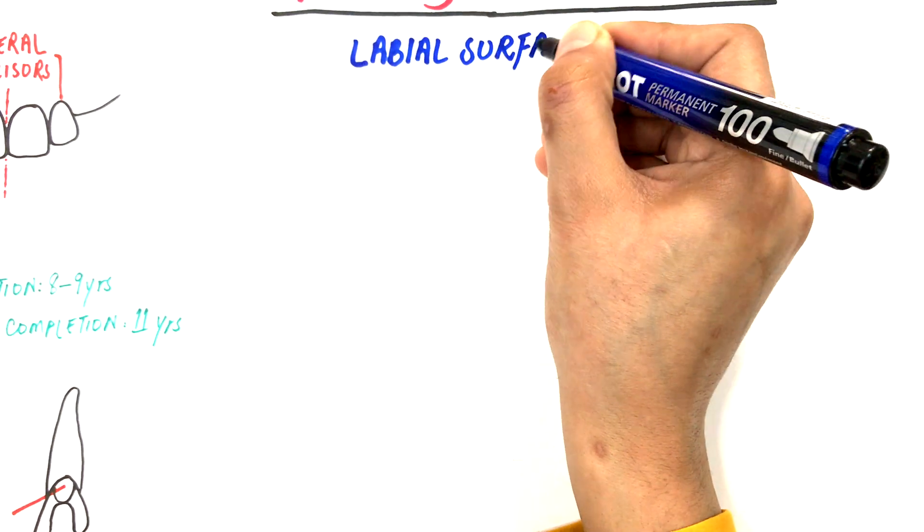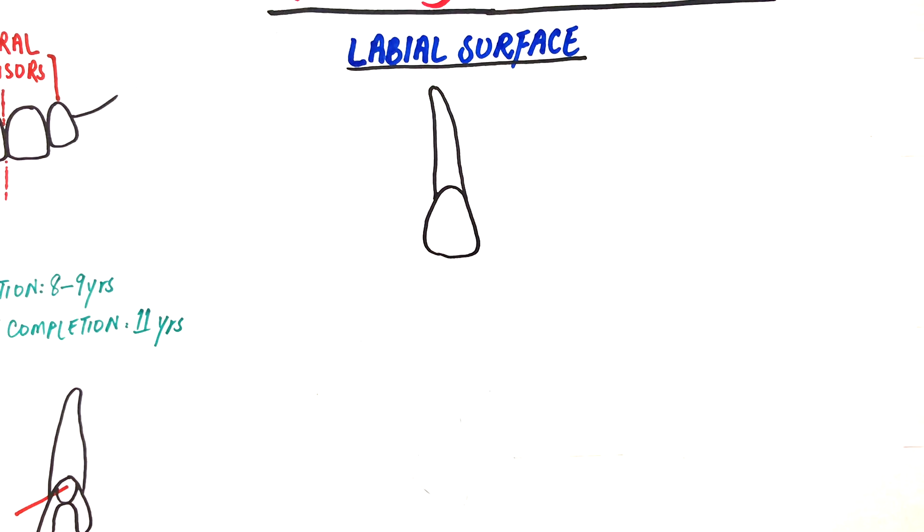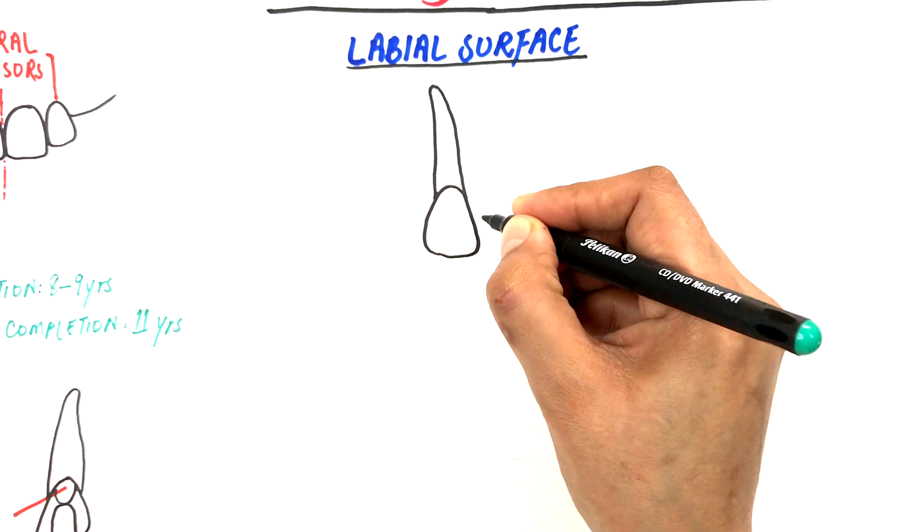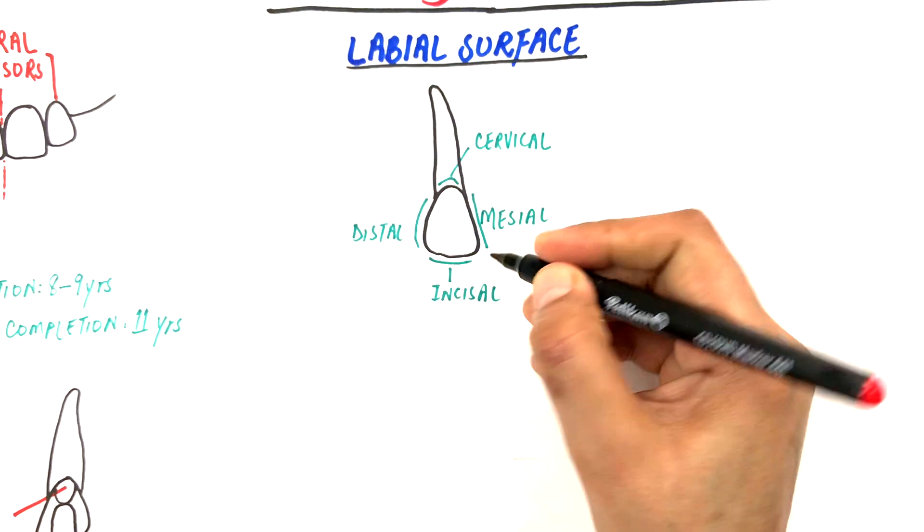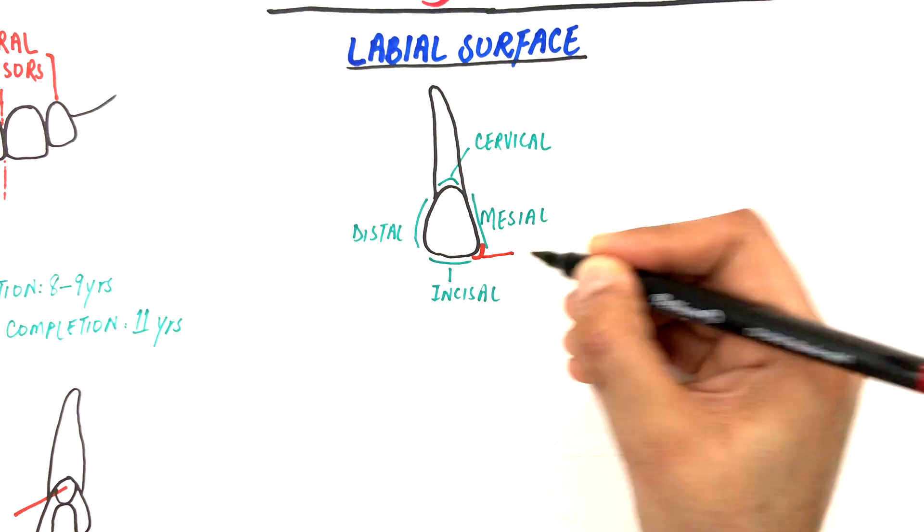From the labial surface, four outlines can be seen and are named the mesial, distal, incisal and cervical outlines. The mesial outline almost resembles the mesial outline of maxillary central incisor but is comparatively more convex and has a more rounded mesioincisal angle.